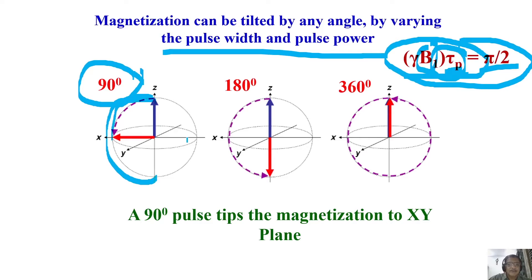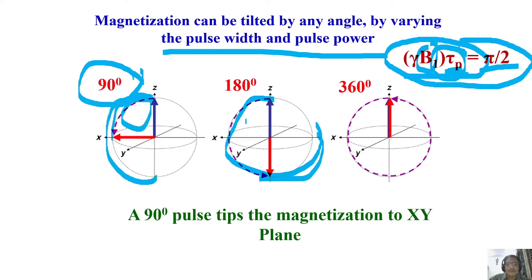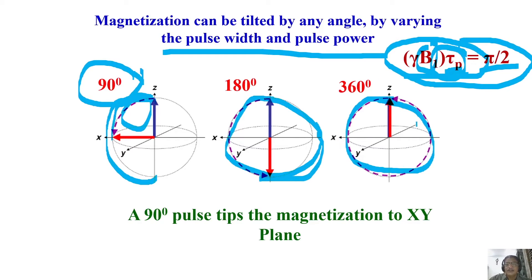Increase further to 3 times the 90-degree pulse width and the magnetization reaches 270 degrees: from Z to X, minus Z, then minus X axis. Increase to 4 times the 90-degree pulse width and it returns 360 degrees — a complete rotation: Z to X, X to minus Z, minus Z to minus X, and back to Z. You can make the magnetization undergo continuous rotation, rotating in the X-Z plane. You can make nuclear spins dance according to your tunes.